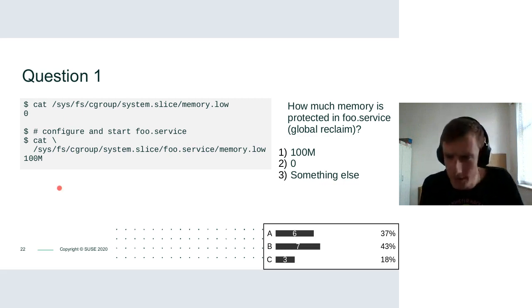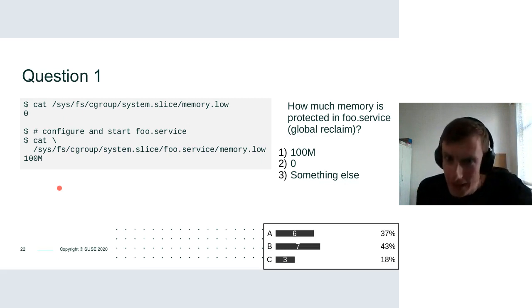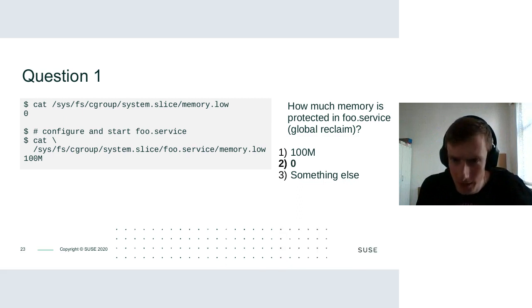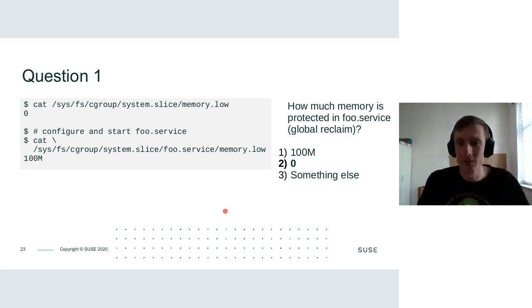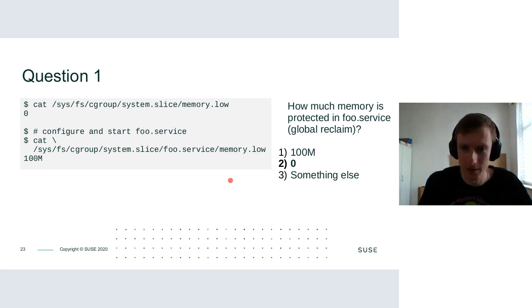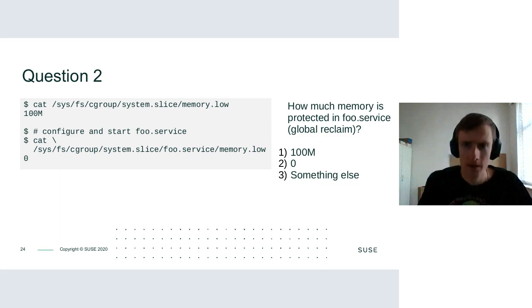The most popular answer is B and it is the correct answer. The child cannot have more protection than the parent, and the parent has zero, so zero is the correct answer.